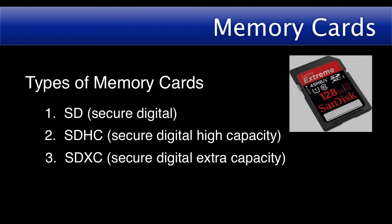Secure Digital Extra Capacity Memory Cards, or SDXC, are SD cards but with a much higher capacity and faster processing speeds. These have a maximum capacity of 2TB. Similar to SDHC in that the SDXC fits in a normal SD slot, but your camera may not be able to recognize this newer technology, so always make sure that you check in advance.